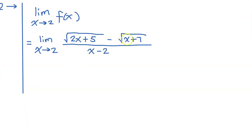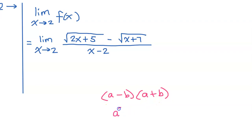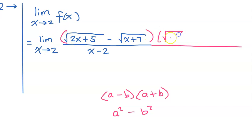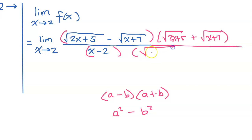Let's try rationalizing the numerator. In order to do that, I'm going to use the concept of a conjugate. If I have a minus b, the conjugate is a plus b. The benefit of multiplying by the conjugate is you always get a squared minus b squared. So the conjugate of the numerator is going to be the square root of 2x plus 5 plus the square root of x plus 7, and of course we have to multiply by the same thing in the denominator.